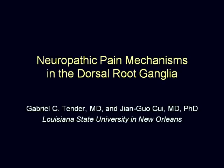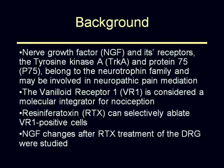First of all, I would like to thank you for allowing us to present our work. So there's increased interest in resiniferatoxin. It's a substance that can selectively ablate the chronic pain neurons. We used this to study the changes in the dorsal root ganglia cells after resiniferatoxin, and particularly we focused on nerve growth factor and its cognate receptor, tyrosine kinase A, and the common receptor for the neurotrophins, which is protein 75.